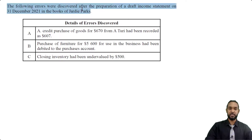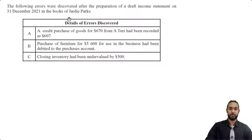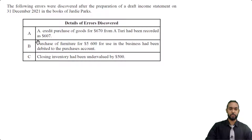So as per usual, we'll take a read of the information before we jump into it. The following errors were discovered after the preparation of a draft income statement on 31st December 2021 in the books of Geordie Parks. A credit purchase of goods for $670 from A2E had been recorded at $607 — that's an error of transposition. The second error says purchase of furniture for $5,600 for use in the business had been debited to the purchases account — that's an error of principle.